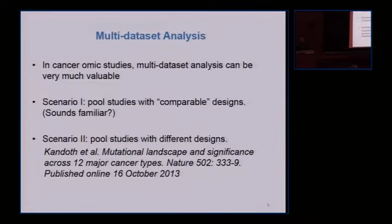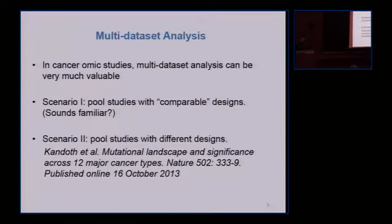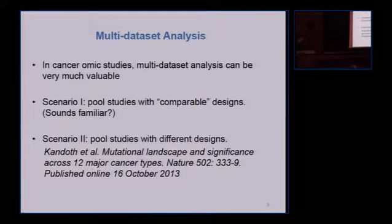The second scenario is more recent and in some sense more interesting. This study was published just a couple of weeks ago in Nature. Researchers look at five major cancer types and analyze existing TCGA data. The goal is to look into what's common across different cancer types and what's unique — what makes one cancer type different from another. If you are interested in multiple cancers, you have to conduct multi-dataset analysis.